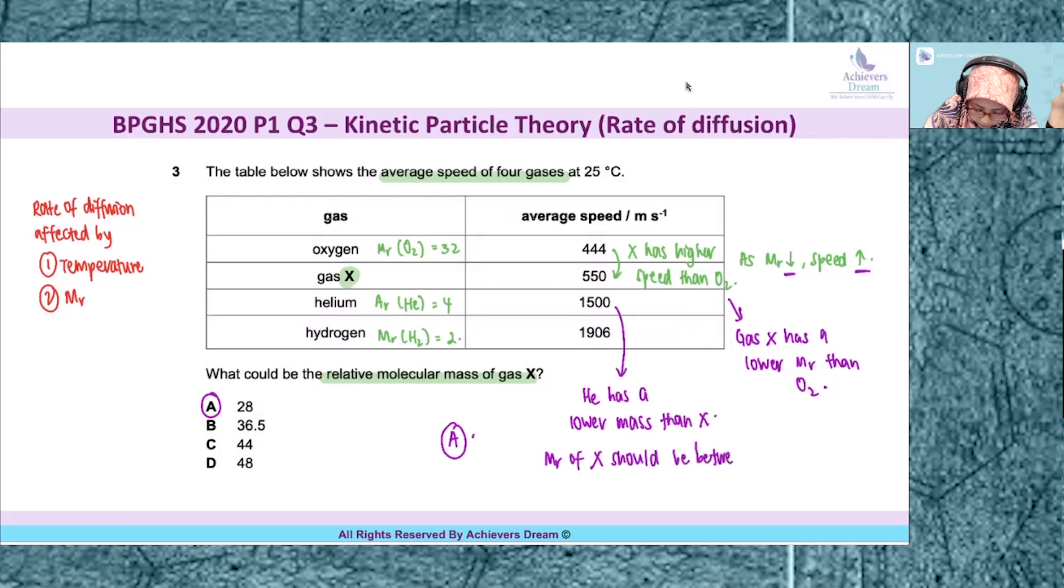So the Mr of gas X should be between the Ar of helium, which is 4, and the Mr of oxygen, which is 32. This is the range you need to pick out based on the data presented to you. So the answer is A.